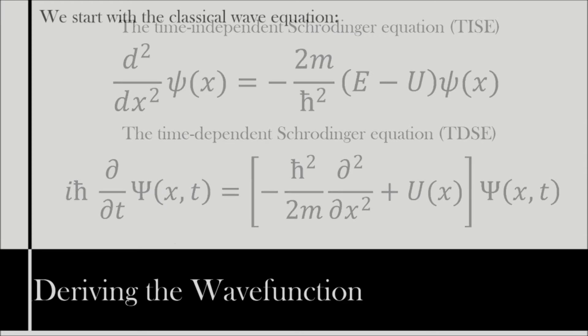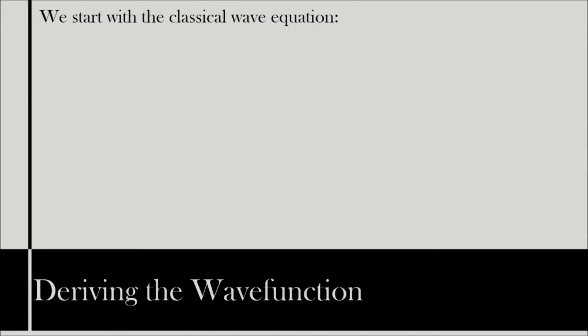One form of his wave equation can be derived from the classical wave equation, a second order partial differential with respect to x of ψ(x,t) equals 1 over v squared times the second order partial differential with respect to t of ψ(x,t).